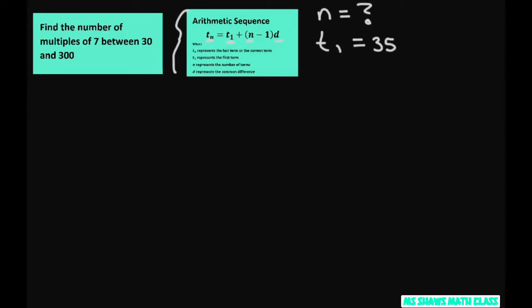Our common difference is 7 because you're going by 7s. So your second term would be 42, for example, and then your third term would be 49, because you can just keep multiplying by 7.